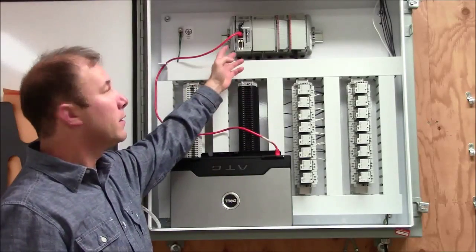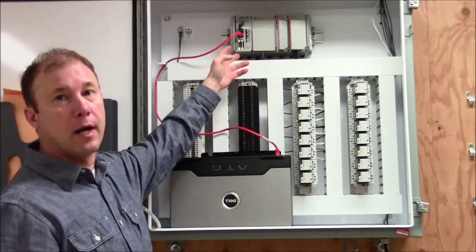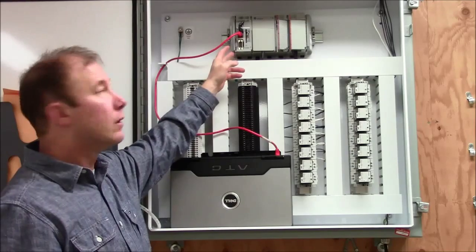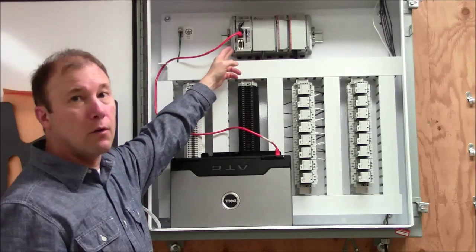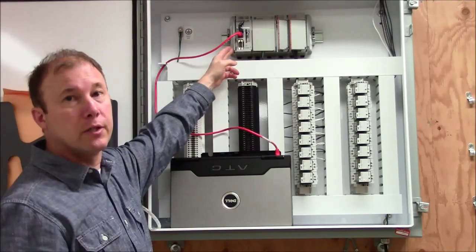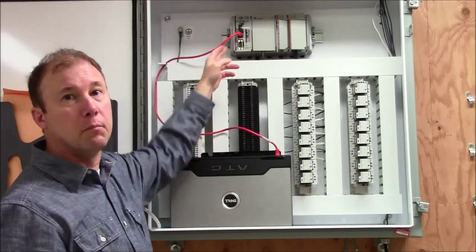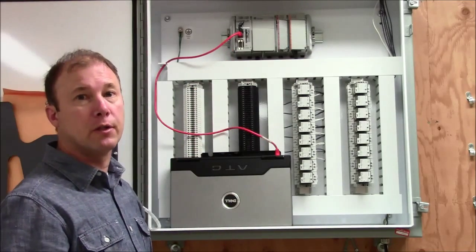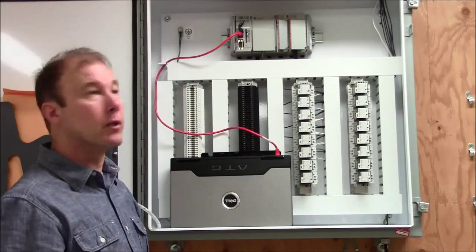Here we have our main components of our programmable logic controller. First of all, we start out with a CPU or central processing unit. That's the brains of the programmable logic controller, as it is in all types of computers.